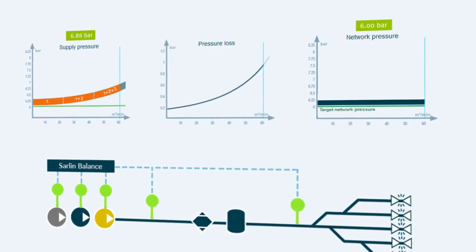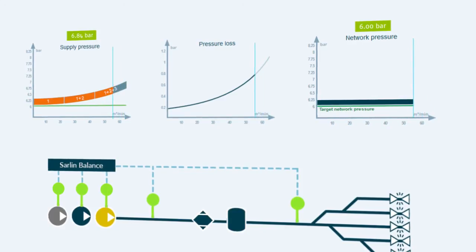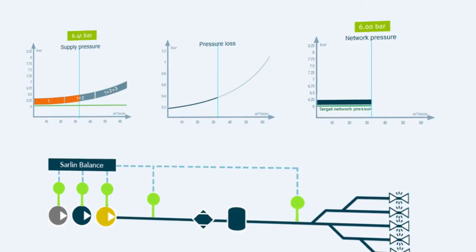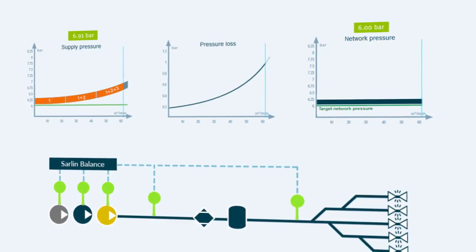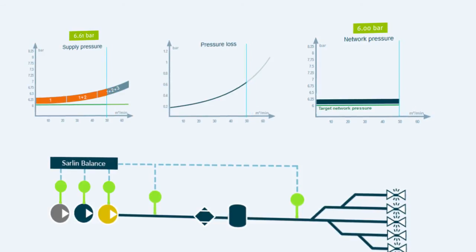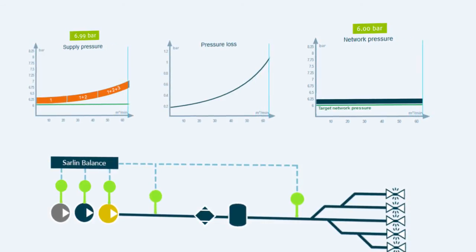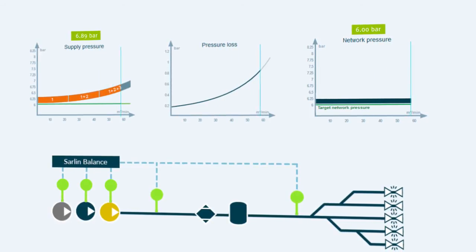Saline balance controls the starting and stopping of the compressors. The output of fixed speed compressors is controlled via load-unload commands. Inverter and turbo compressors are controlled by changing their internal pressure settings. Saline balance keeps the output pressure correct in real time and minimizes the blow-off of turbo compressors.